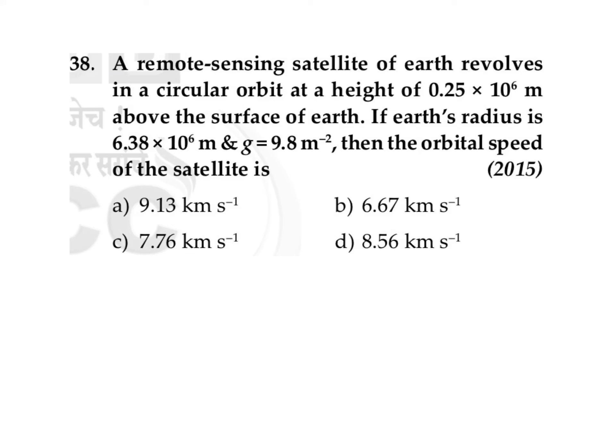A remote sensing satellite of Earth revolves in a circular orbit at a height 0.25 × 10⁶ meter above the surface of Earth. If the Earth's radius is 6.38 × 10⁶ meter and g is 9.8, then the orbital speed of that satellite is: